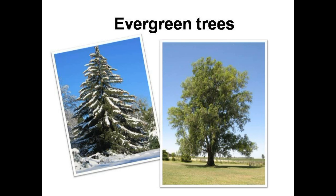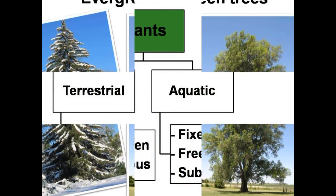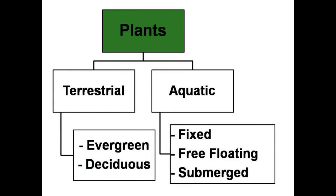So there are terrestrial plants and aquatic plants. Terrestrial plants are either evergreen or deciduous. Aquatic plants can be divided into three groups: first, fixed water plants; second, free floating plants; and third, underwater plants.